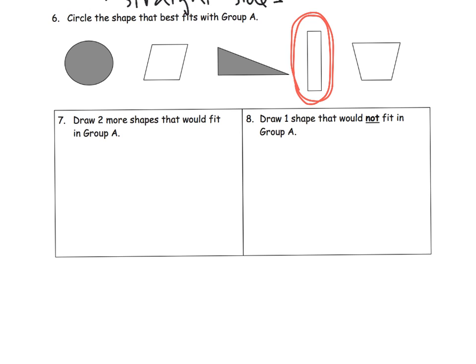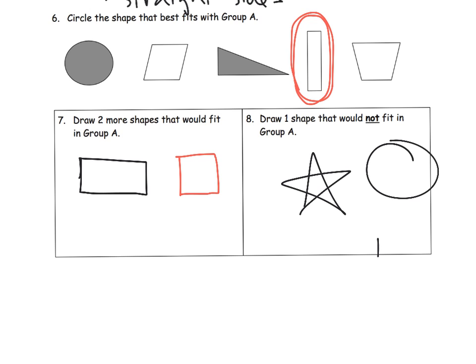And then we've got number seven. Draw two more shapes that would fit in group A. So, we're talking rectangles, right? With square corners. That's not a very good rectangle. But it's pretty close. There you go. We're talking rectangles. And then, lastly, draw a shape that would not fit in A. And, boy, there's a lot of shapes that would not fit in A.